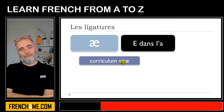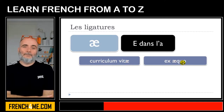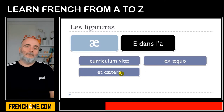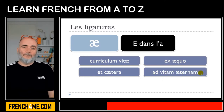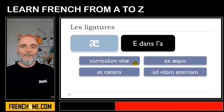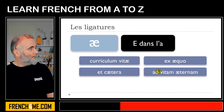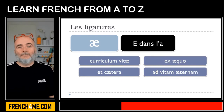The first example is 'curriculum vitae.' The second one is 'exæco.' Then 'et cætera.' And then 'ad vitam æternam.' If you look carefully at these words, you realize that this letter comes directly from Latin. It's quite rare to see this letter in the French language. I've chosen the more common examples, because the others you will probably never use or encounter.